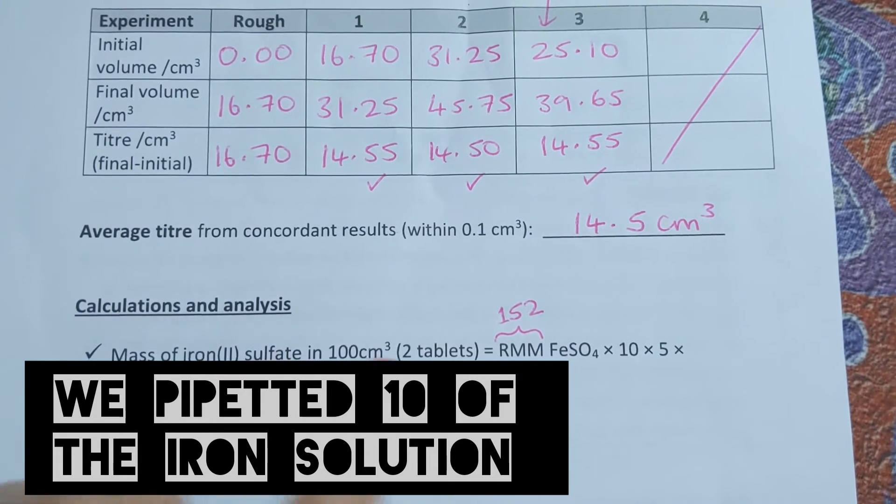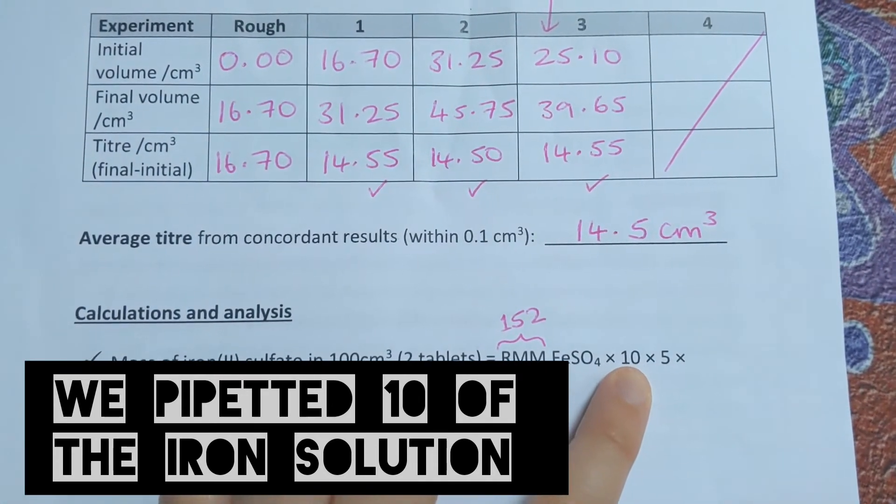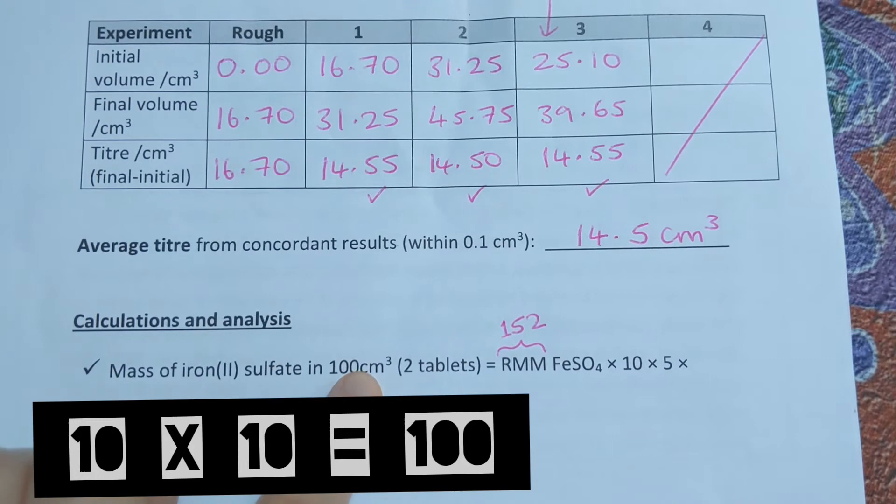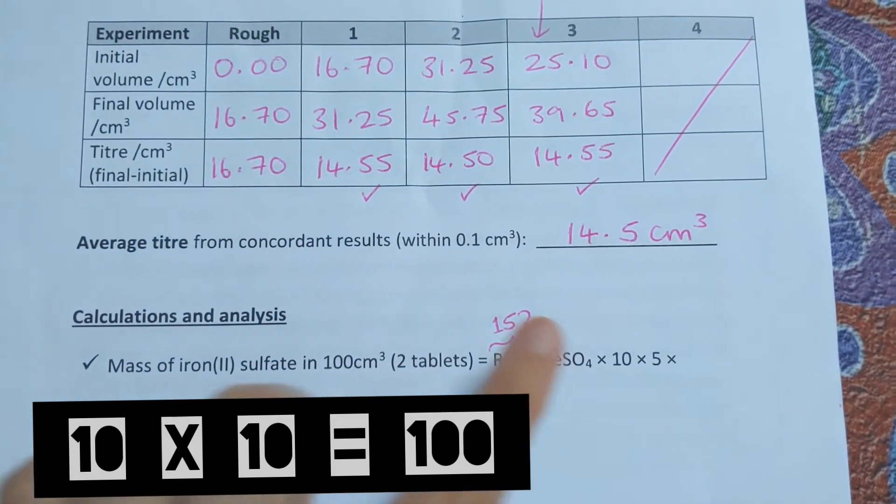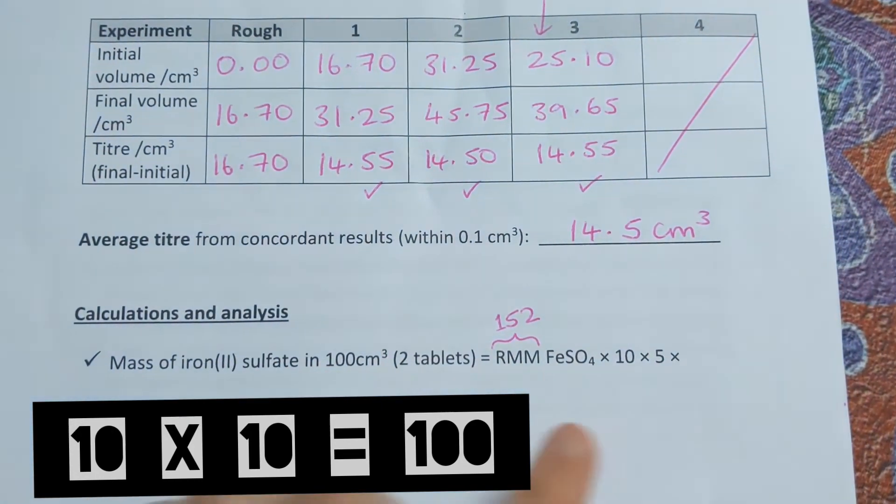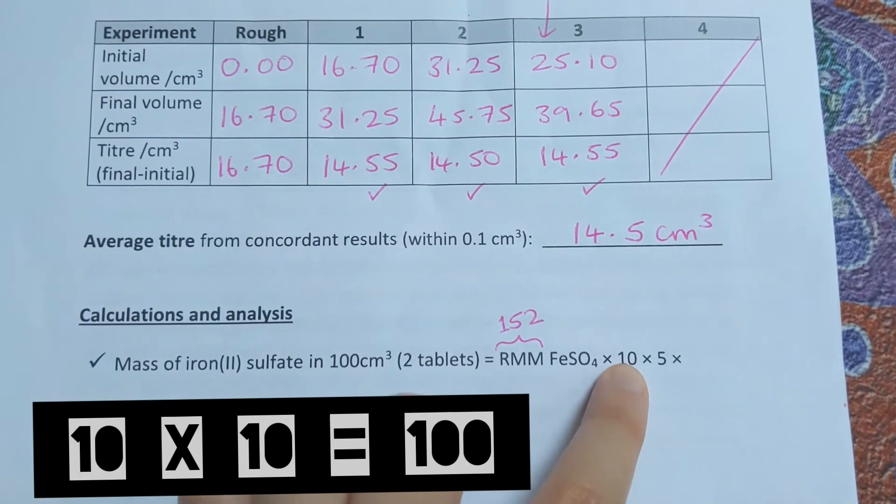We pipetted 10, but we need to work out the mass of iron in 100, so to scale up from 10 to 100 we have to times by 10. That's where this comes from.